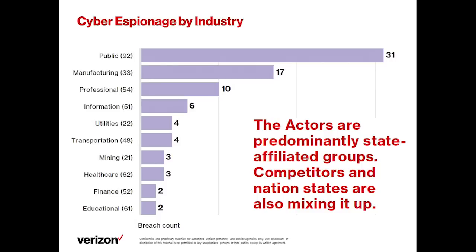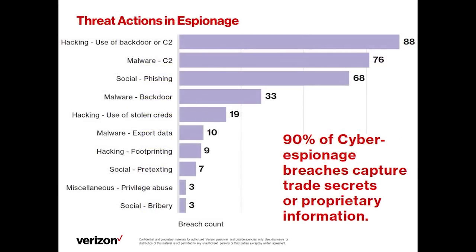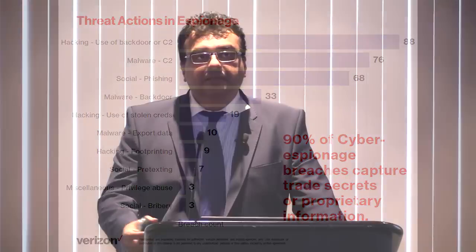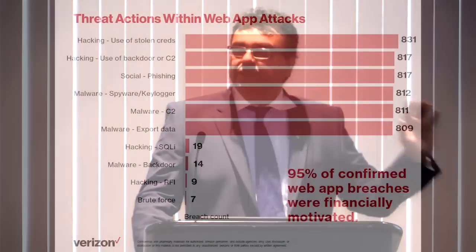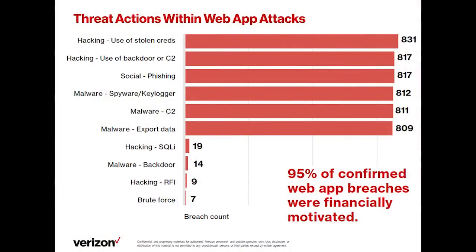The report goes into much more detail for each incident pattern. For cyber espionage in public sector: about 31 cases. Within that threat action, in 88 cases they used a backdoor or command-and-control; social phishing in 68 cases. Over 90% of espionage breaches capture trade secrets or proprietary information. One way to interpret this: what assets in your organization are trade secrets or proprietary? Those might be a great starting point to focus on. Members of the Verizon team are here on the booth and we do walkthrough sessions for customers — for free.